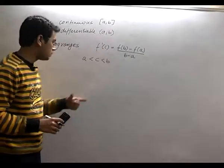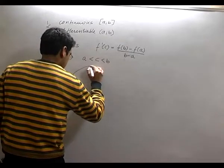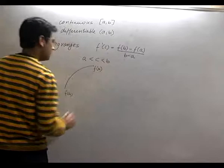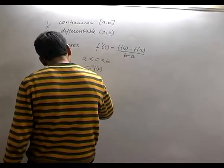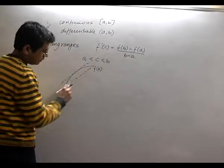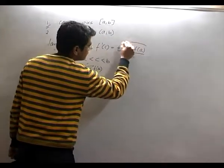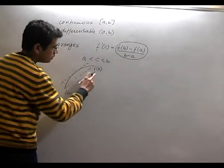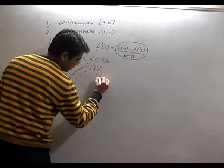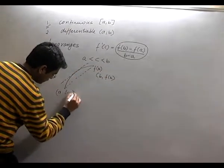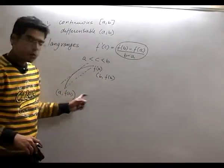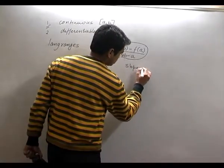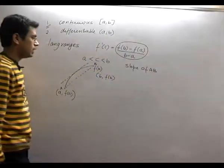अब इसका interpretation देखते हैं। अगर मेरा curve ऐसा था — यह point a है जिसकी value f(a) है, और यहाँ value f(b) है। अगर मैं इन दोनों को line से जोड़ूँ, तो right-hand side पर जो [f(b) - f(a)] / [b - a] है — इस point के coordinates (a, f(a)) और (b, f(b)) हैं — यह nothing but the slope of line AB है।